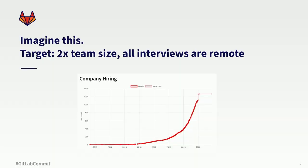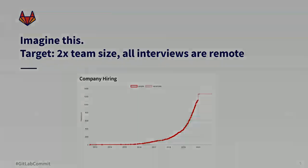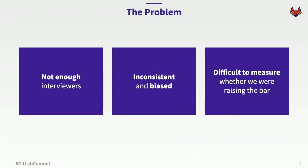So imagine this: imagine you had a hiring target of doubling your team size and all your interviews are remote. Welcome to GitLab. This is our company hiring chart during the past year, and this hiring target is challenging. Here are the main three problems: we didn't have enough interviewers for the pipeline of candidates coming through, our process was inconsistent and biased, and it was difficult to measure whether we were raising the bar — making sure each candidate that joins the team makes the team better.